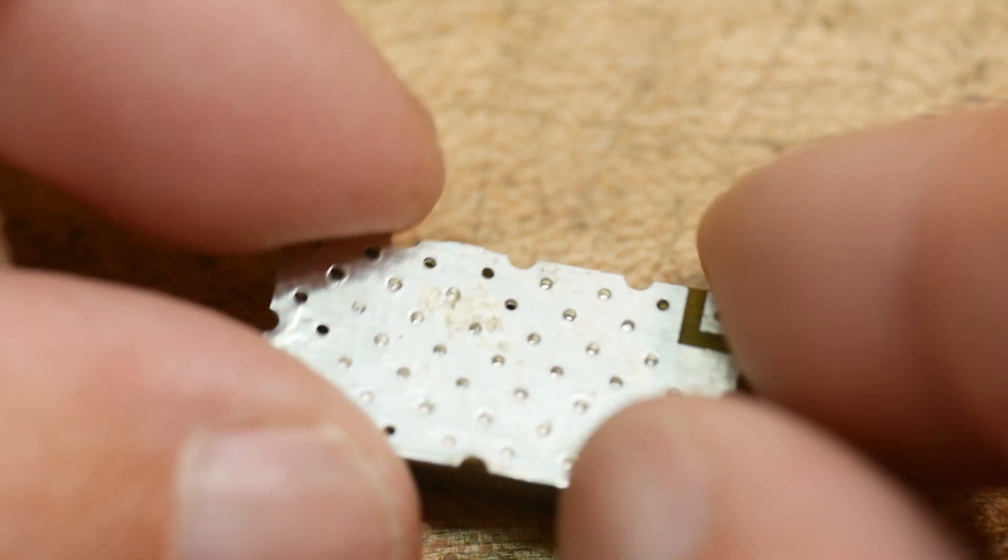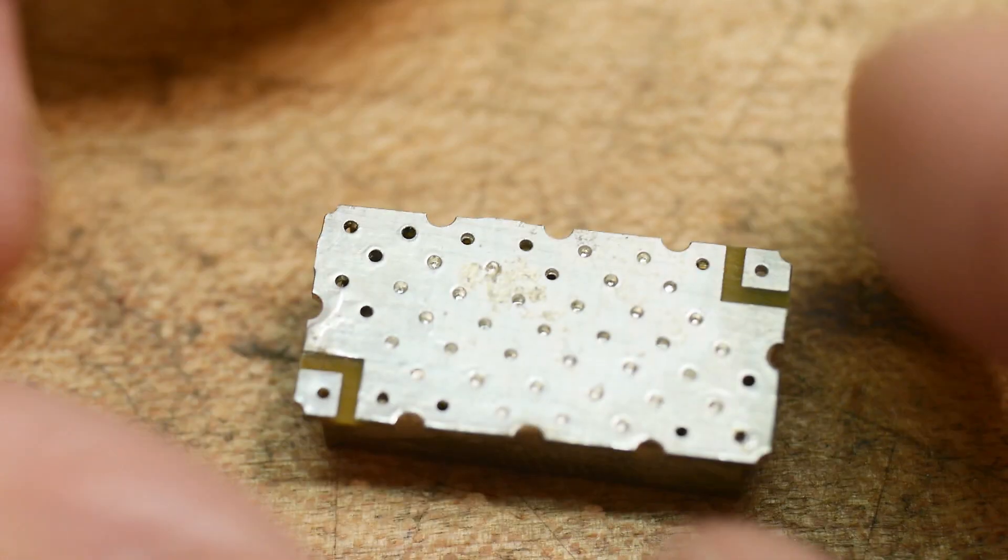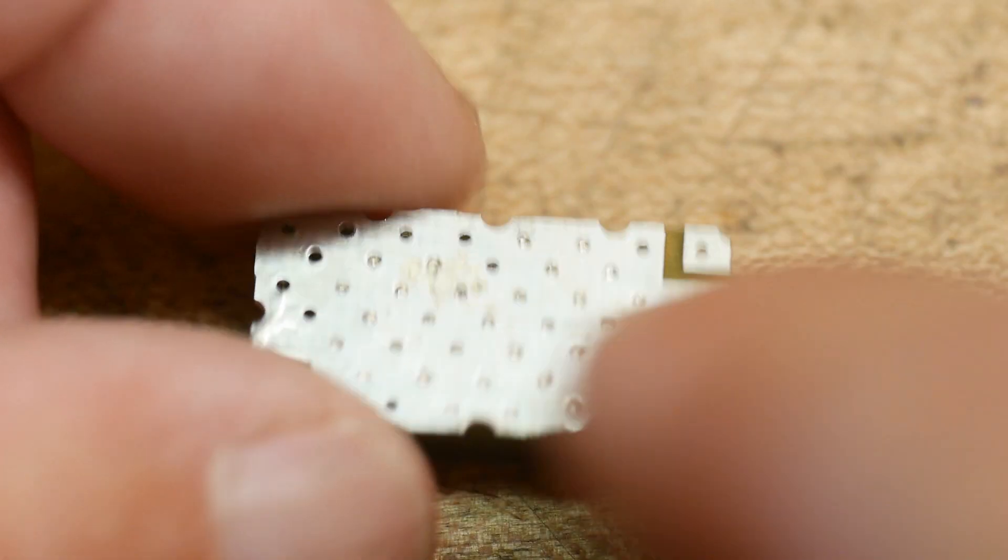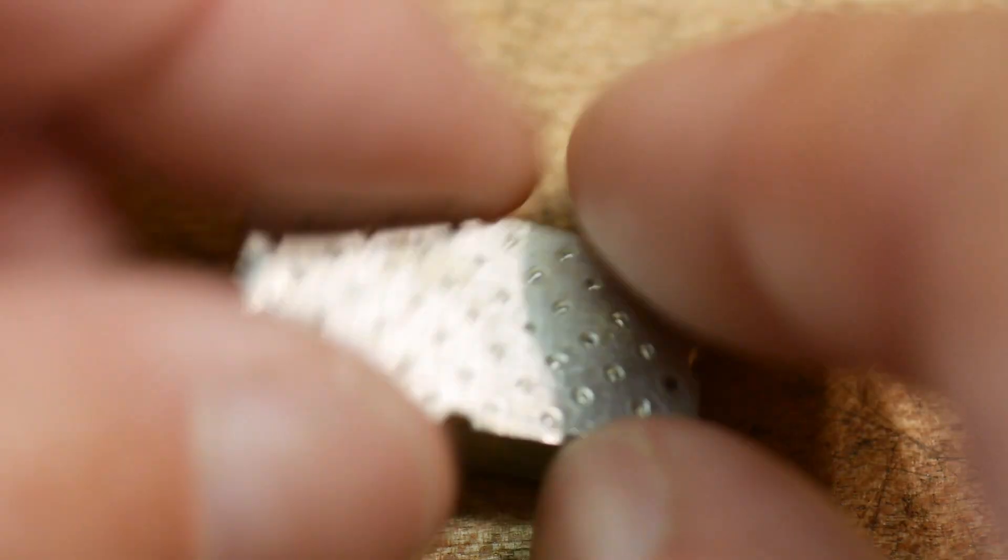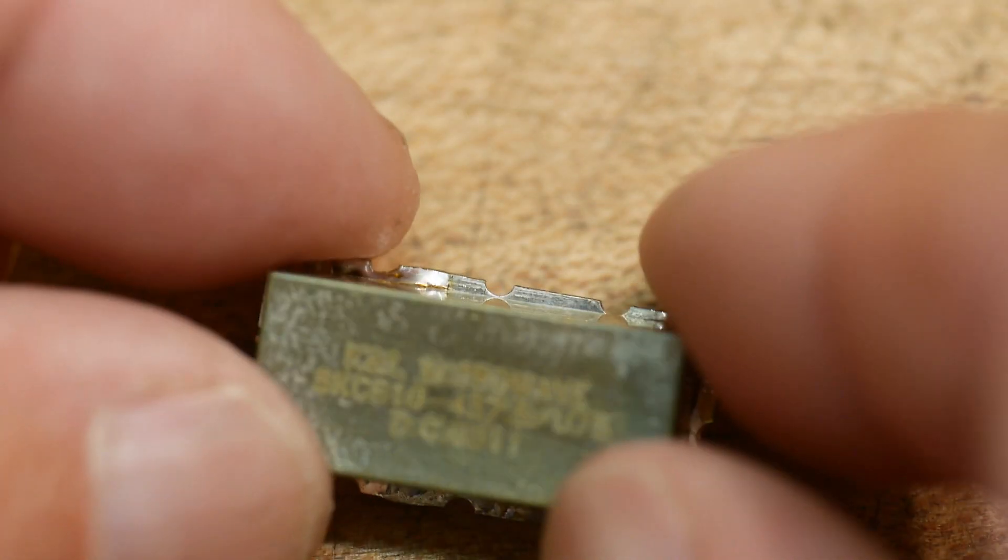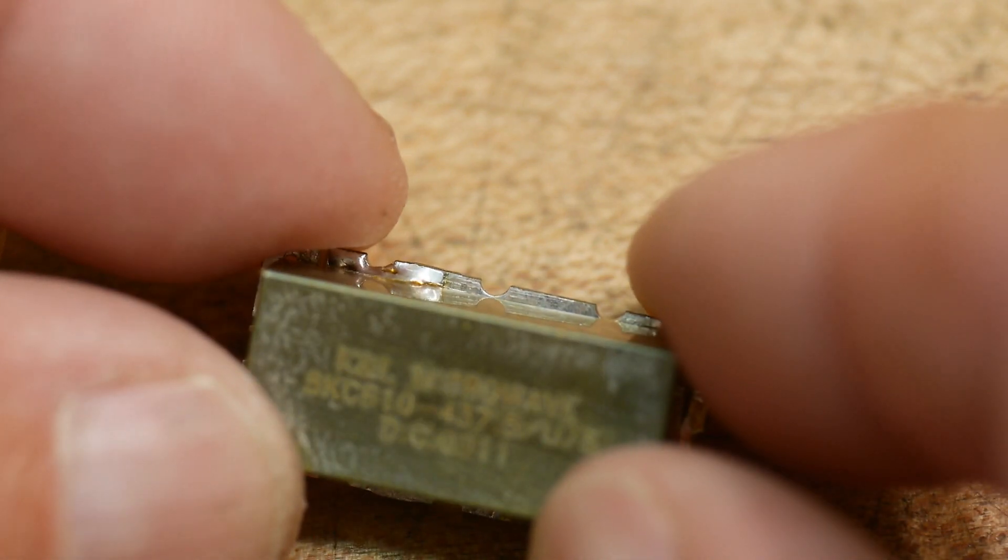So they are to be surface mounted I guess. That's kind of interesting. We can figure out here that that's ground and this is input-output. It's probably symmetrical so it doesn't matter if it's in or out.